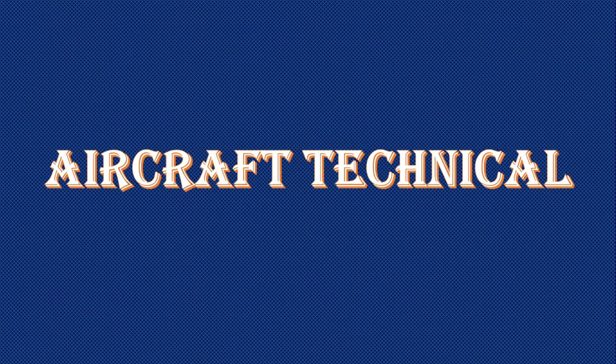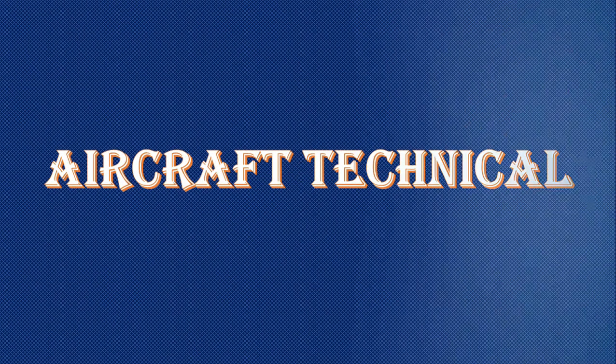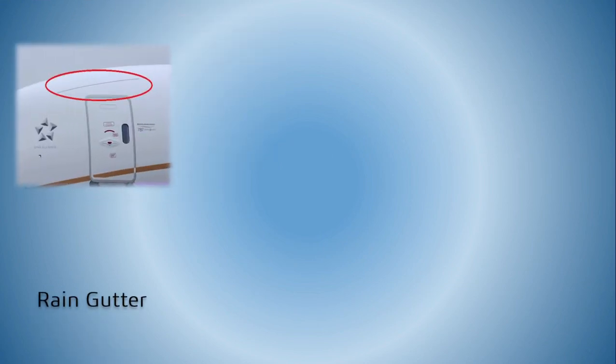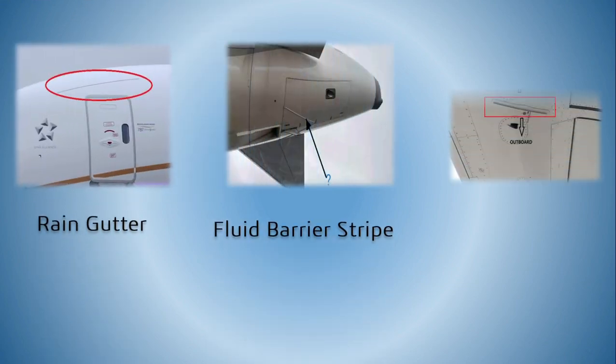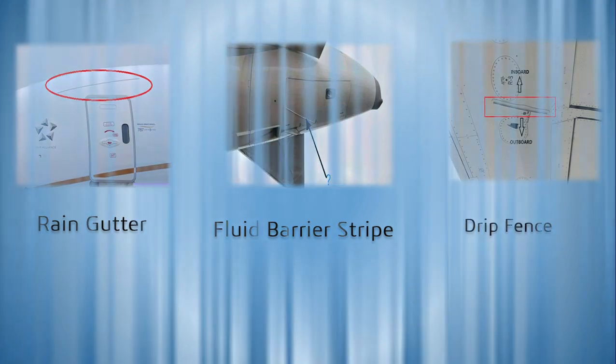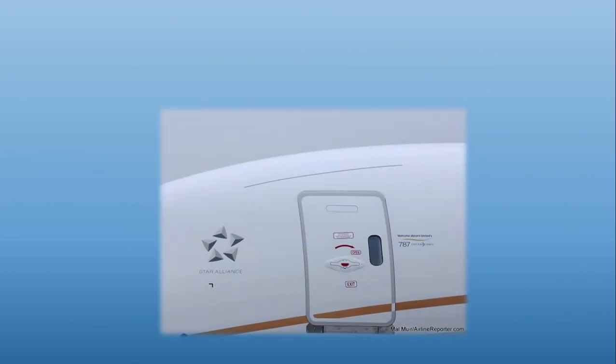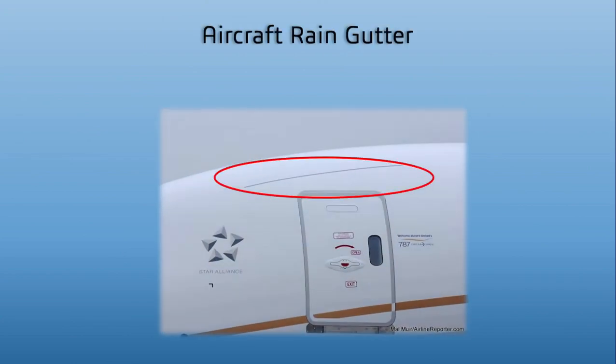Hello friends, welcome to Aircraft Technical Guys. In this tutorial we will discuss about the aircraft rain gutter, APU door fluid barrier strip, and drip fins. The encircled metal strip object in this picture is the aircraft rain gutter.